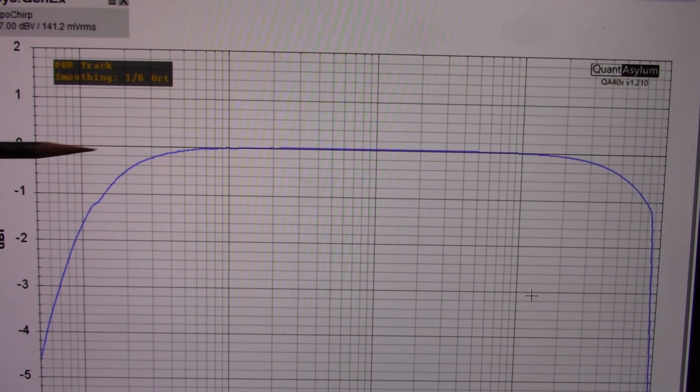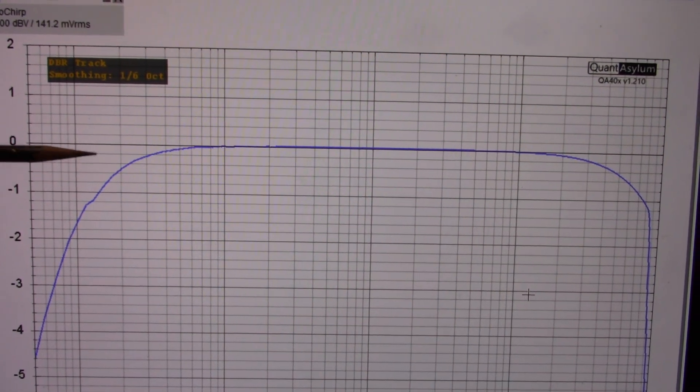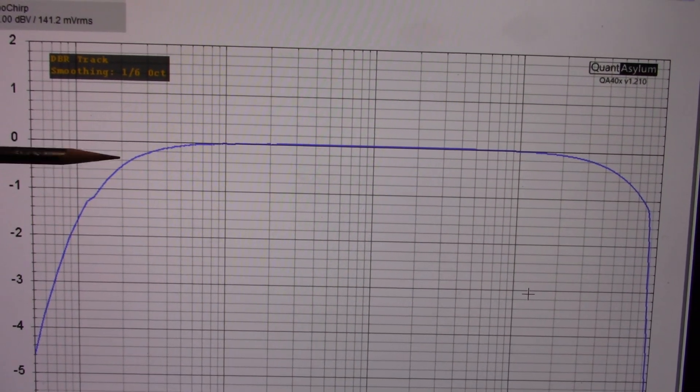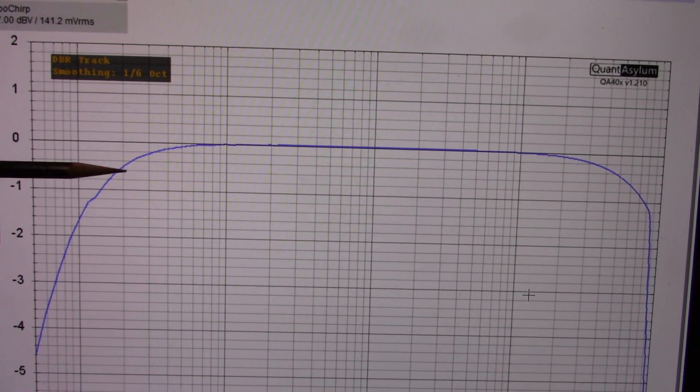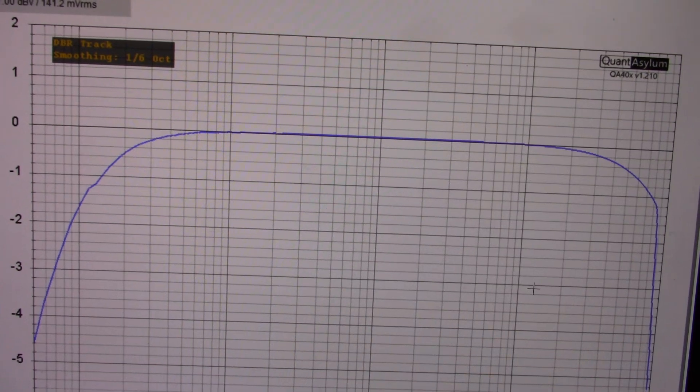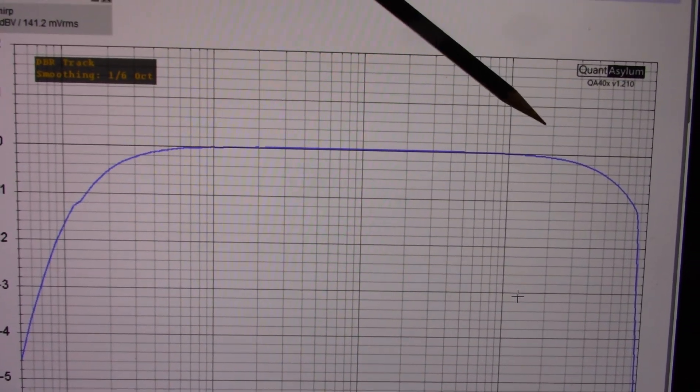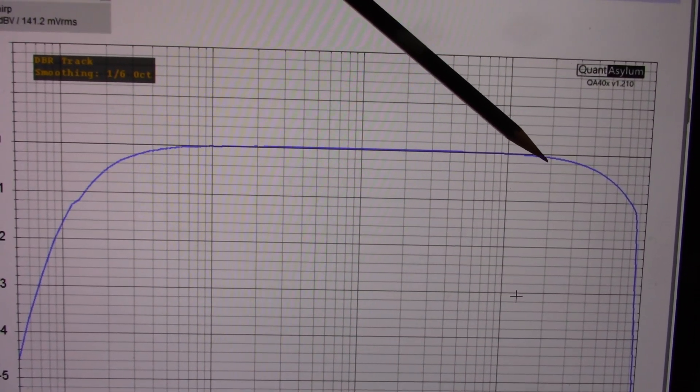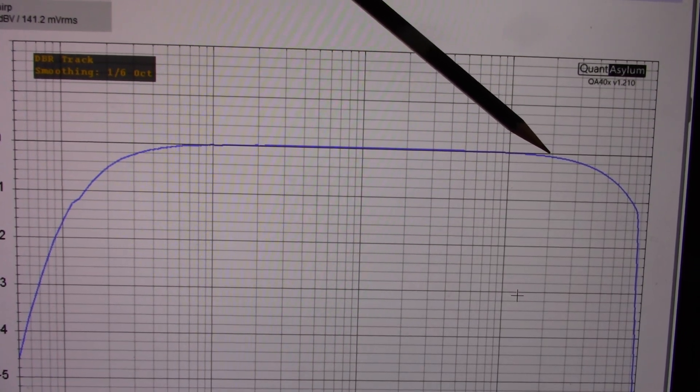To roll the bass off even lower, but 20 hertz is considered the minimum of the audio band and that's just fine. At the high end here we're less than one tenth of a dB down at 20 kilohertz.